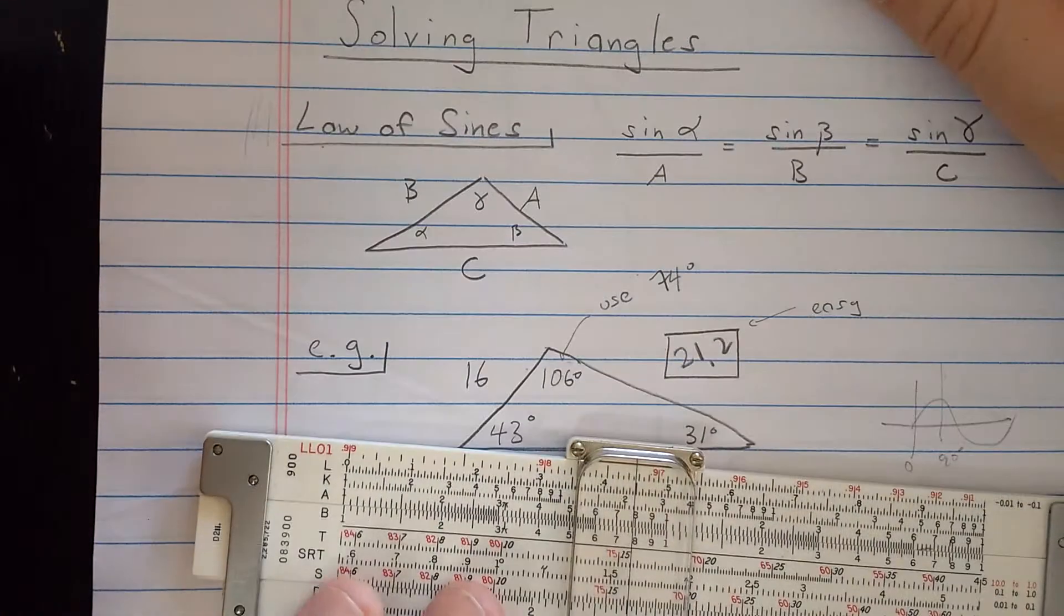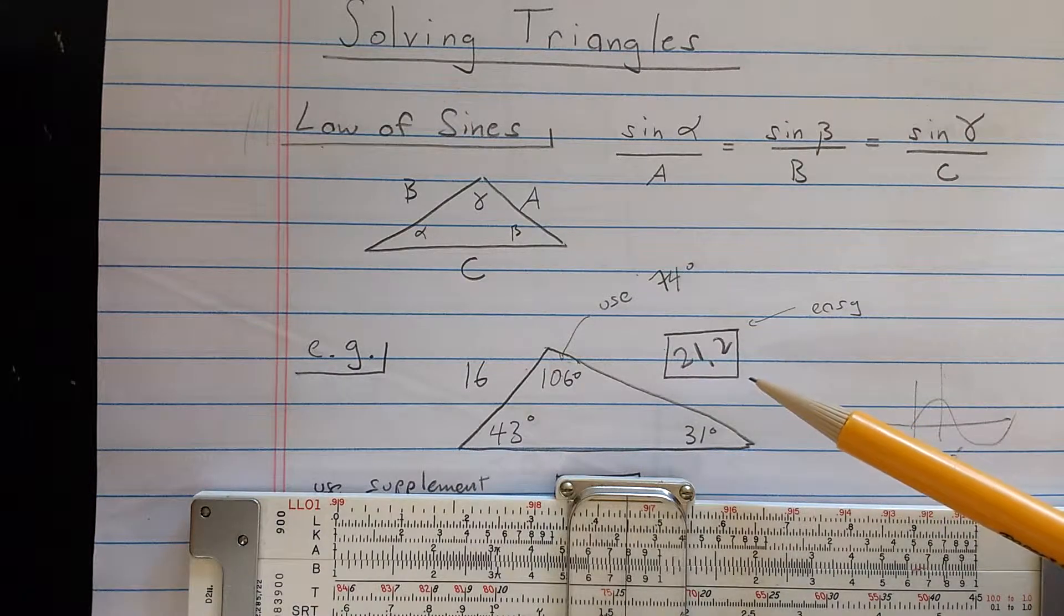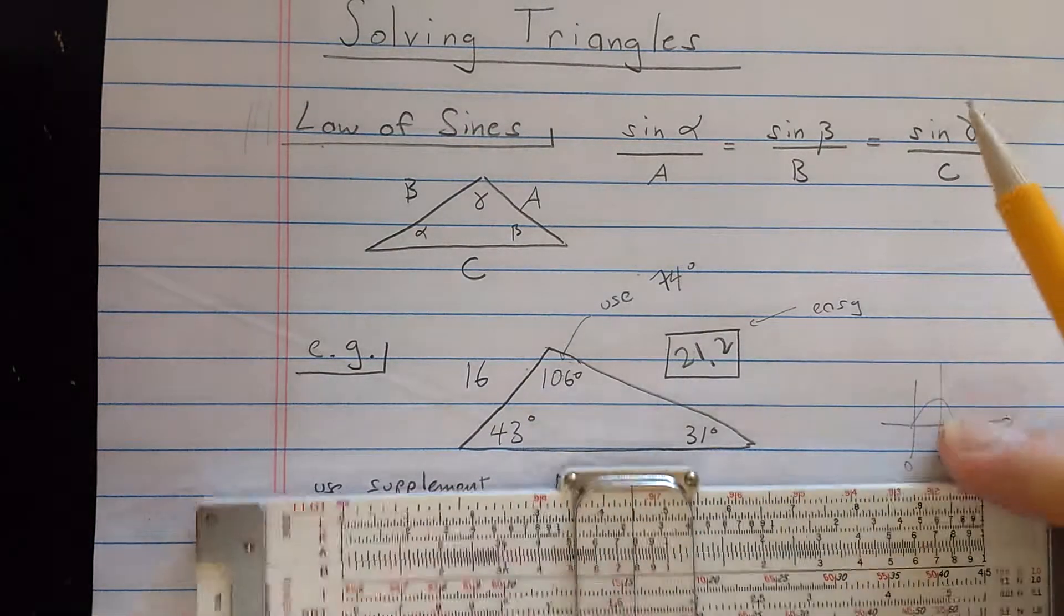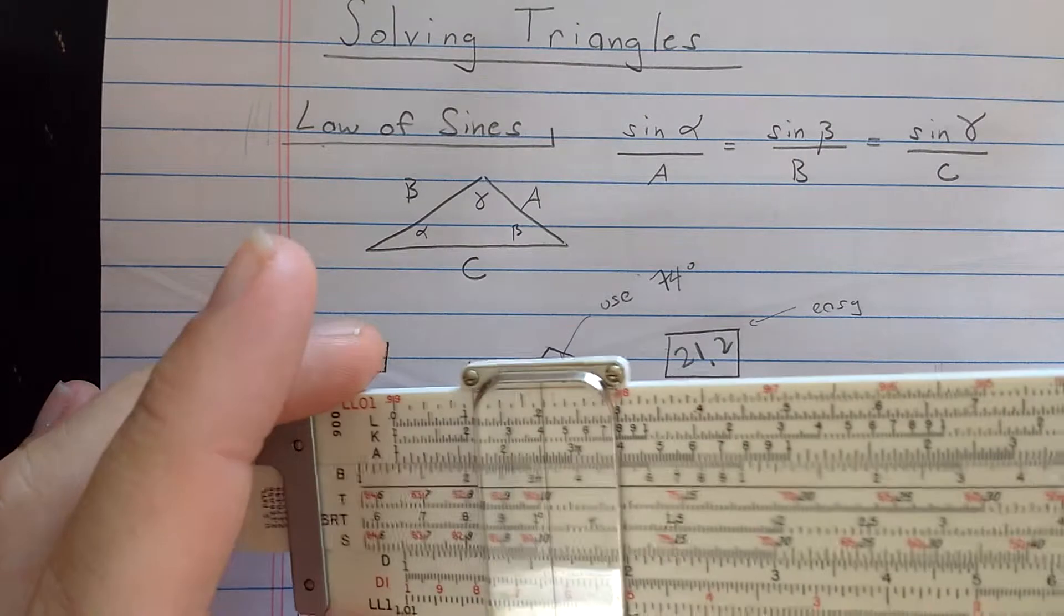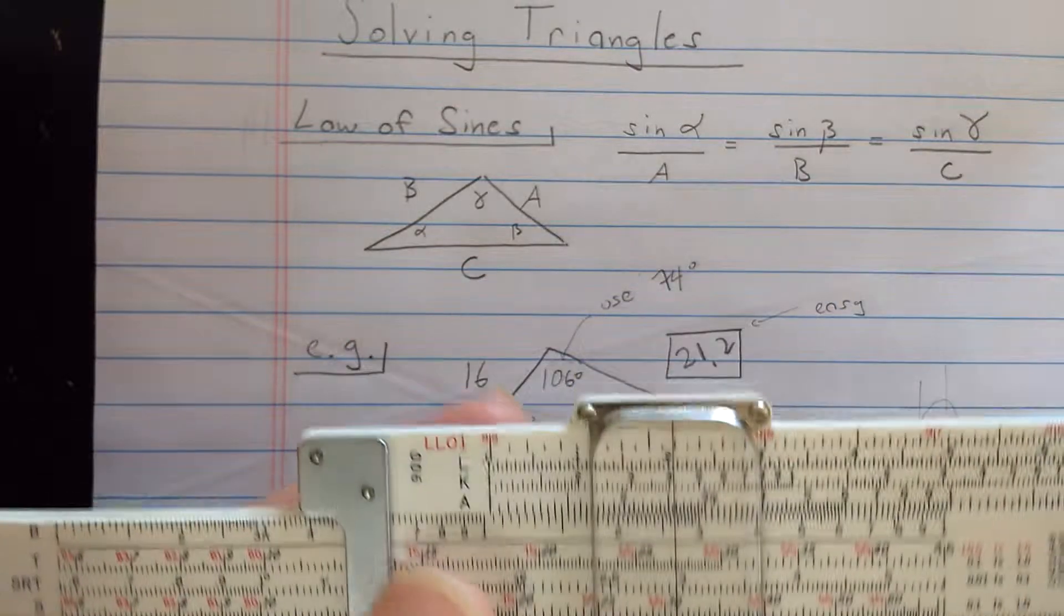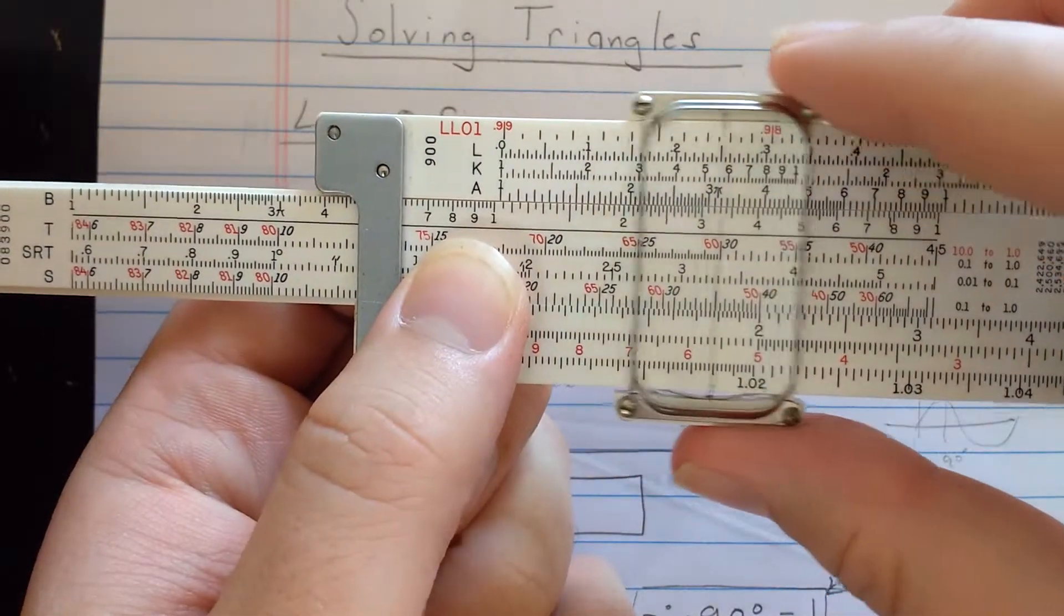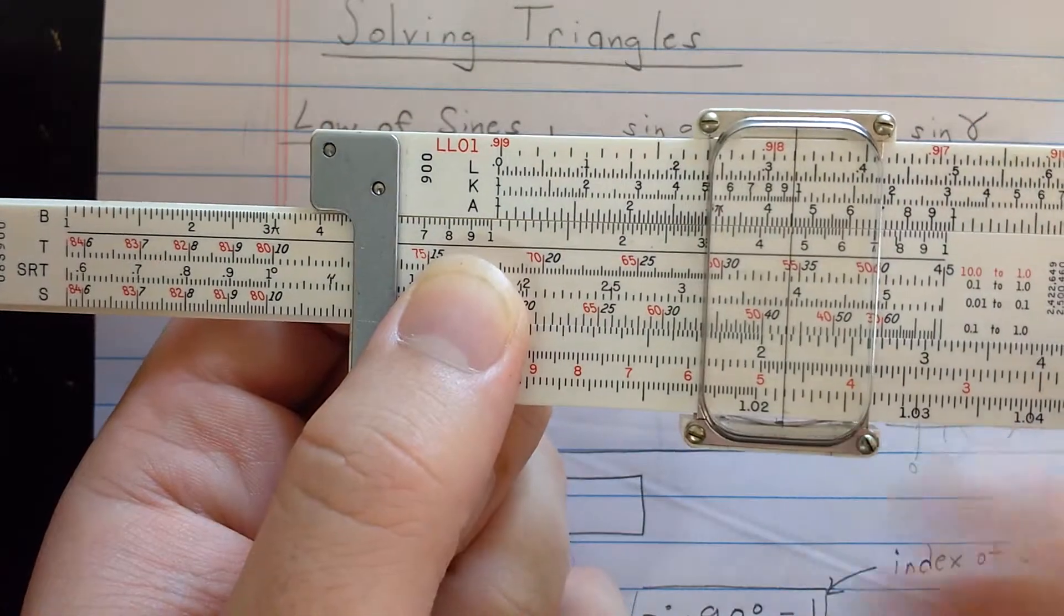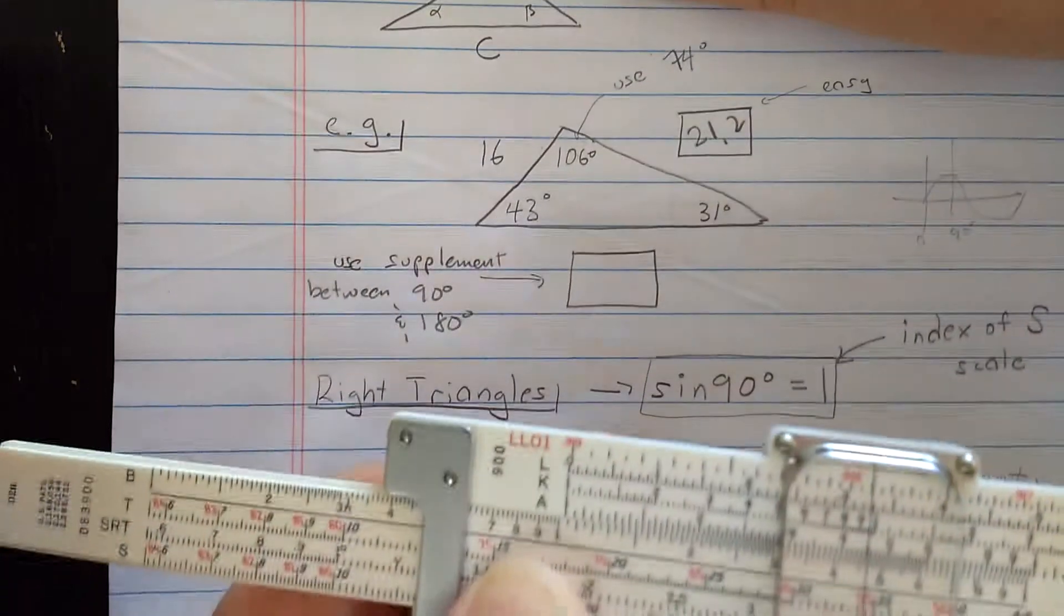Let's look at this first one. Now this first, let's imagine that this is unknown, this 21.2. How could I find that? Well, I know one of these ratios, the 16 over sine 31. So I set 16 here on the D, and then I set sine 31 on S. So there's 31. Then what? All I need to do is find the 43 degrees. The sines are reading on the S scale. So here's 40 degrees, 41, 42, 43. And what do I read down on the D? The D is reading about 21.2, or the length of that side.